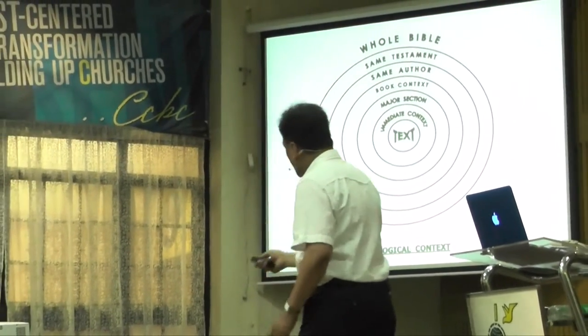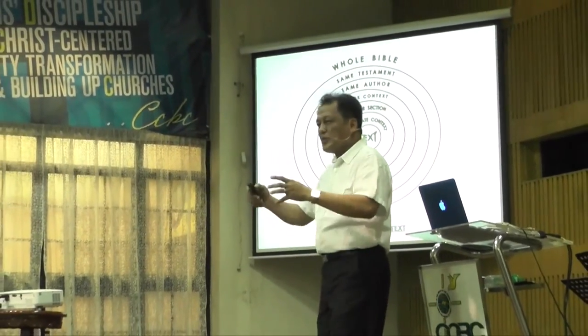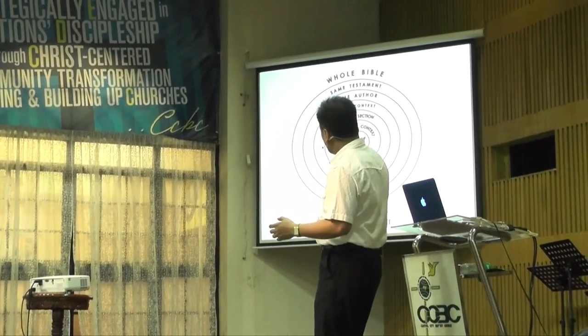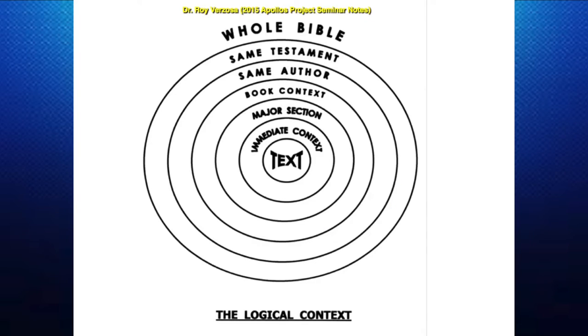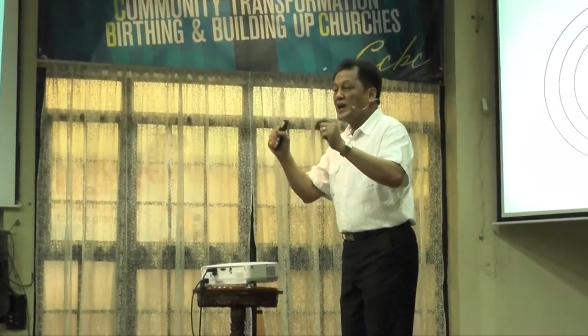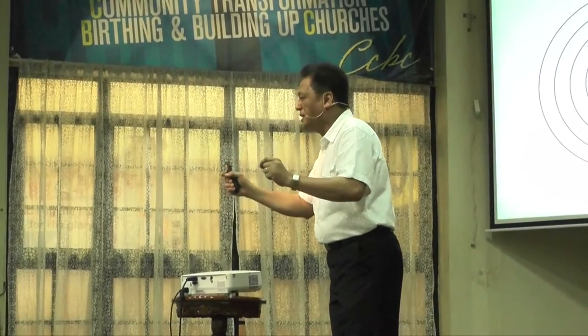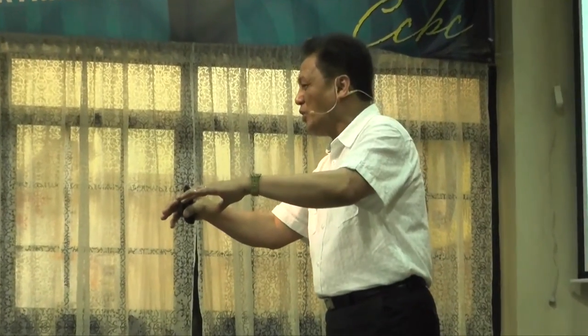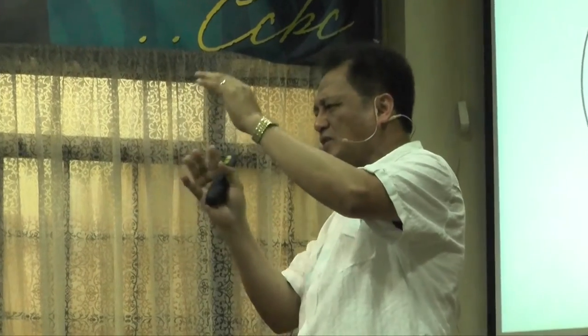You start with the text. A lot of times we take a text out of its context, and that's when it becomes a pretext. You look at the text and then the immediate context — the immediate context is the paragraph division in your Bibles. Remember, the paragraph divisions, verse divisions, and paragraph titles are not inspired — they were just added later on. When Paul wrote those words, there were no divisions. You can disagree with the divisions, but these are scholars who did this, and that already helps us.